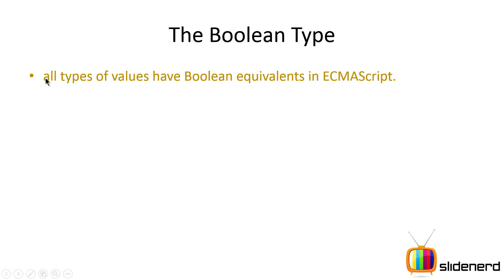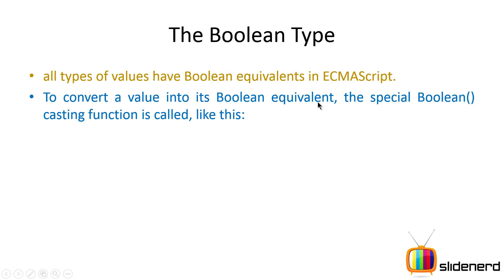All values can be converted to a boolean in JavaScript or ECMAScript. To convert a value to boolean, call the function named Boolean — with a capital B — followed by parentheses. For example, let's say I have a variable called 'test' with the value 'hi', which is a string because of the double quotes.